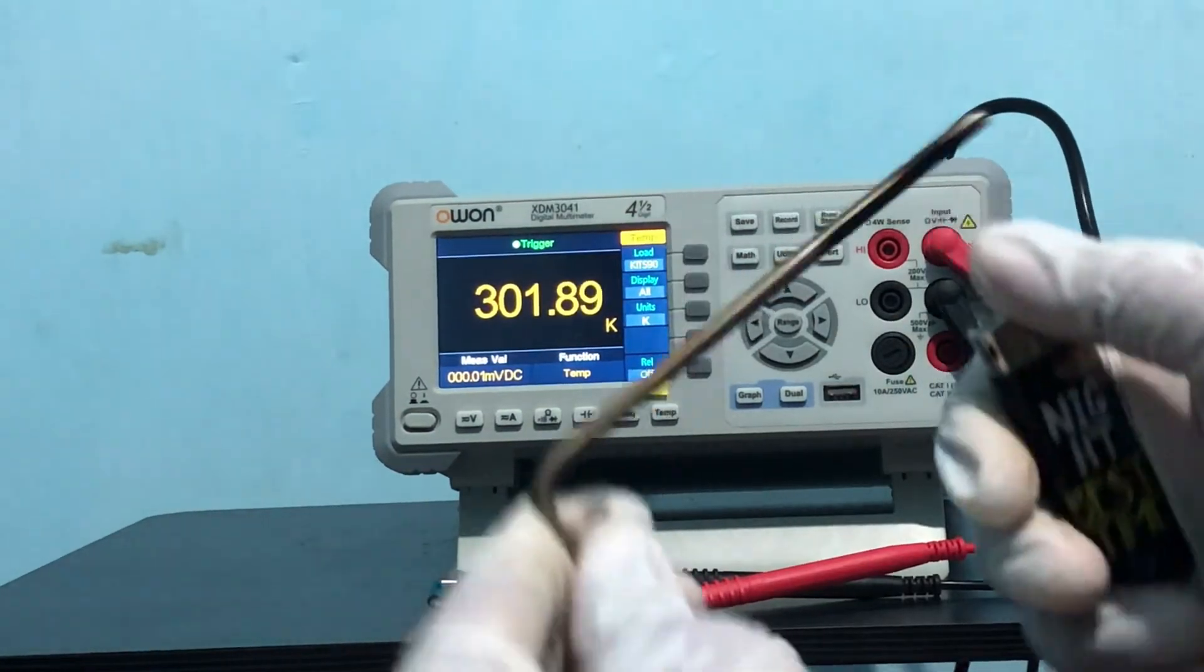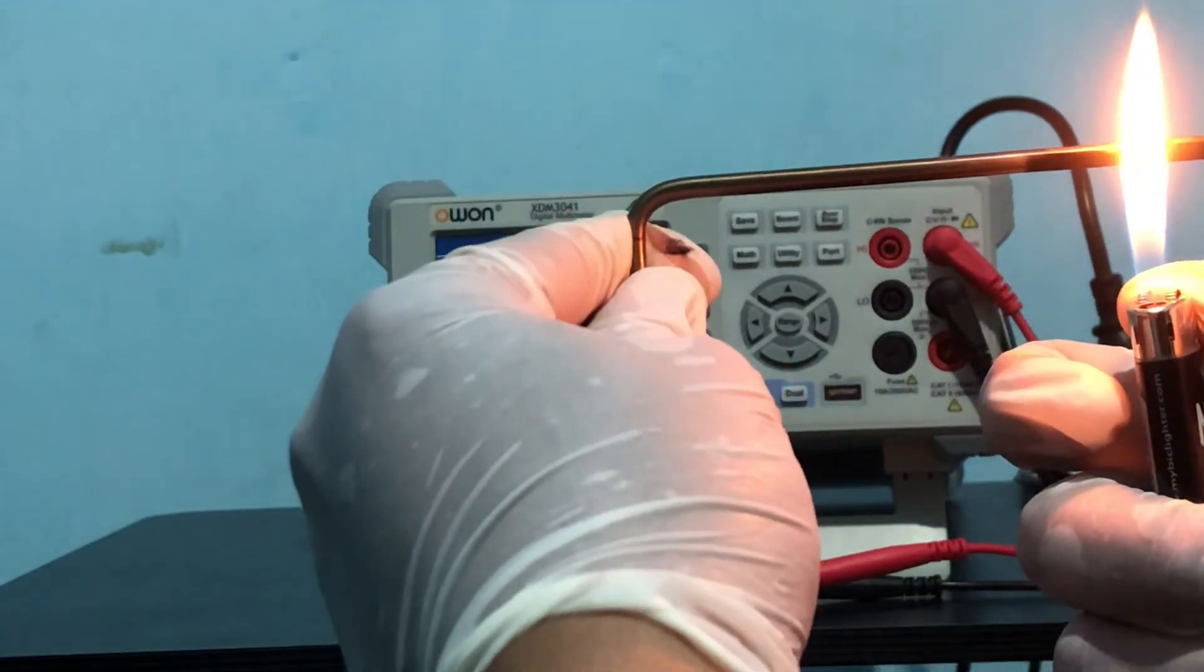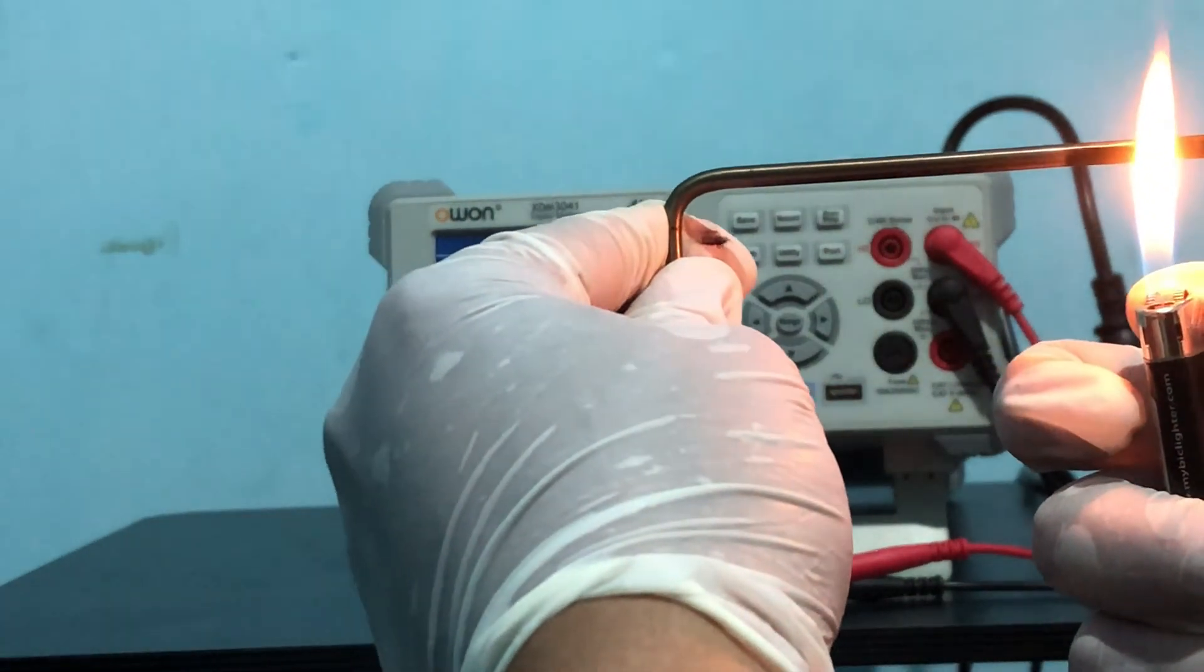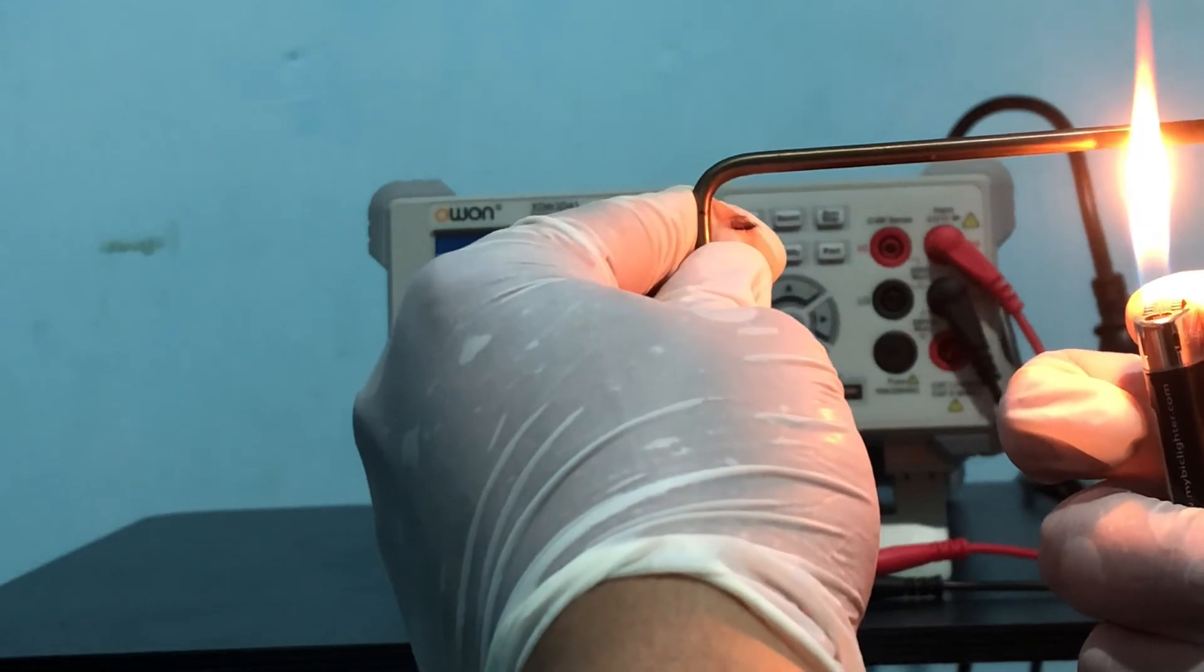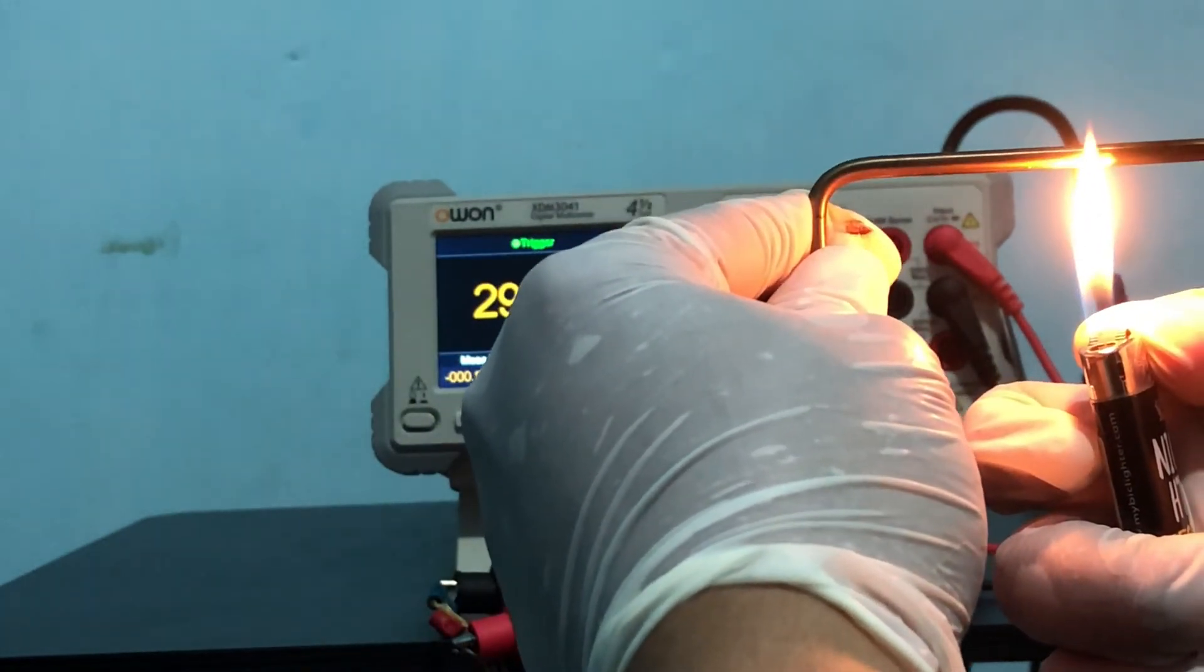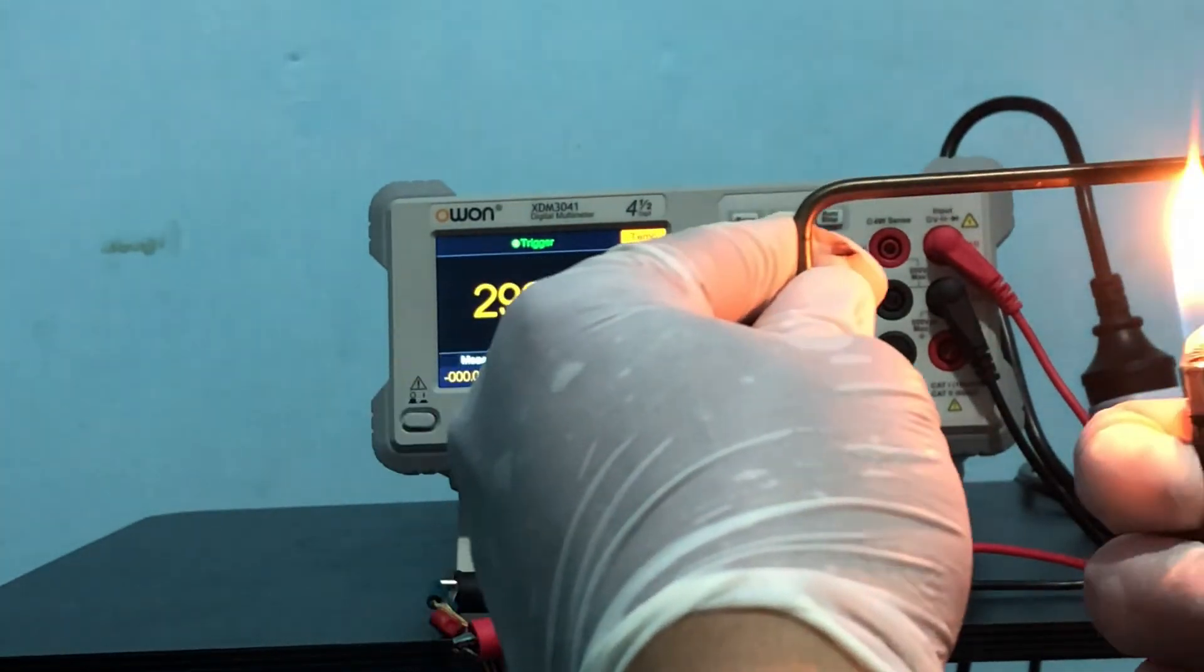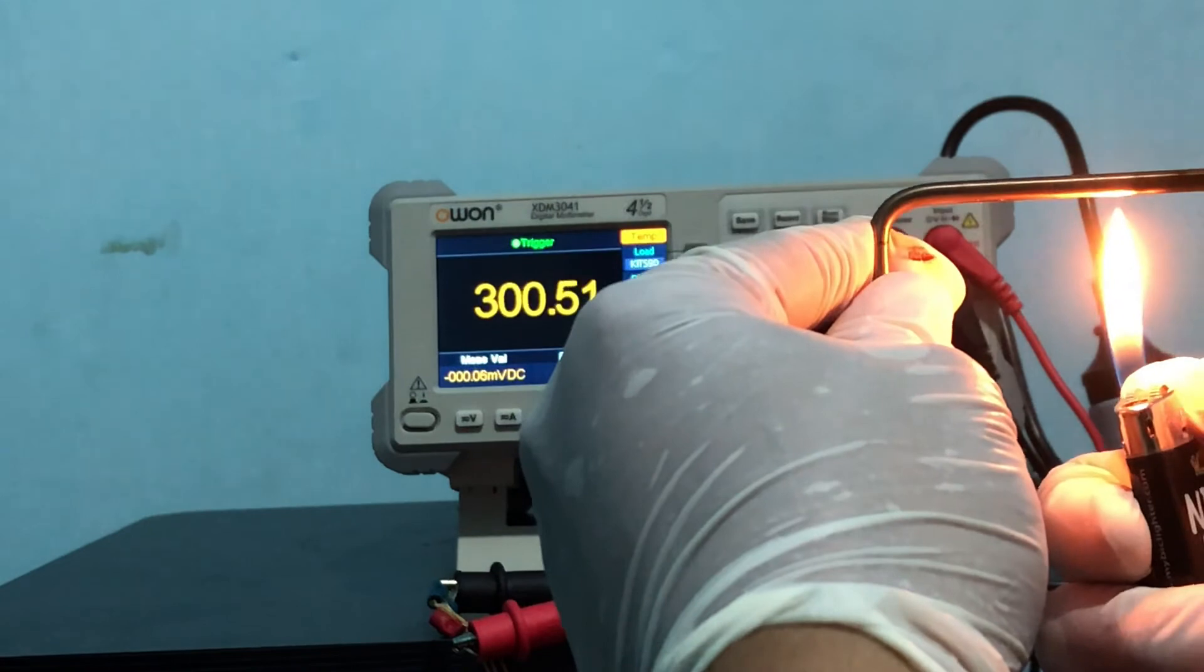For demo purposes, I use this defective temperature transducer just to show that the multimeter is working. You can see there is a change in value in the LCD while we are heating the temperature transducer.